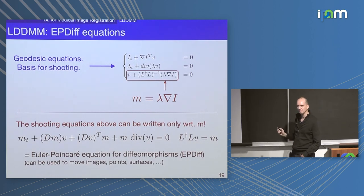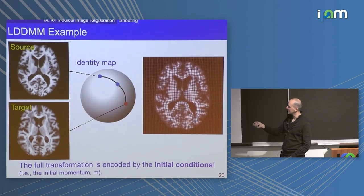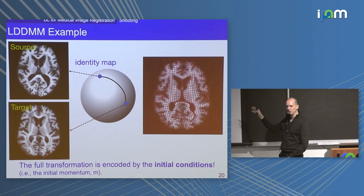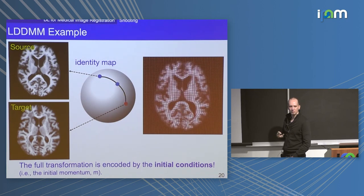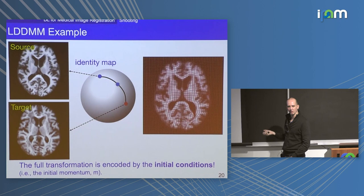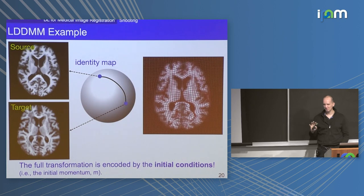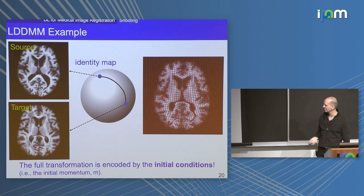So this is what it looks like: you start at the identity map and move through some sort of space, expressing the deformation just based on initial conditions. Like specifying the initial slope of a line to know where it goes — here you specify the initial momentum and it parametrizes the transformation. The nice thing is that if you smooth it sufficiently — if your differential operator is strong enough — then in theory you get diffeomorphic transformations no matter how far you integrate, assuming a sufficiently good discretization.